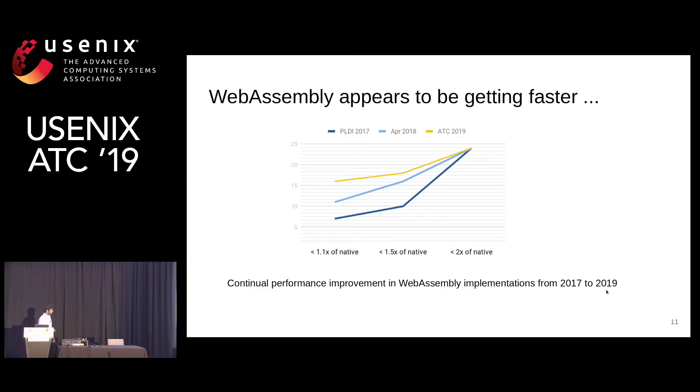For example, in 2017, there were only seven benchmarks within 10% of native, which increased to 15 benchmarks in 2019.